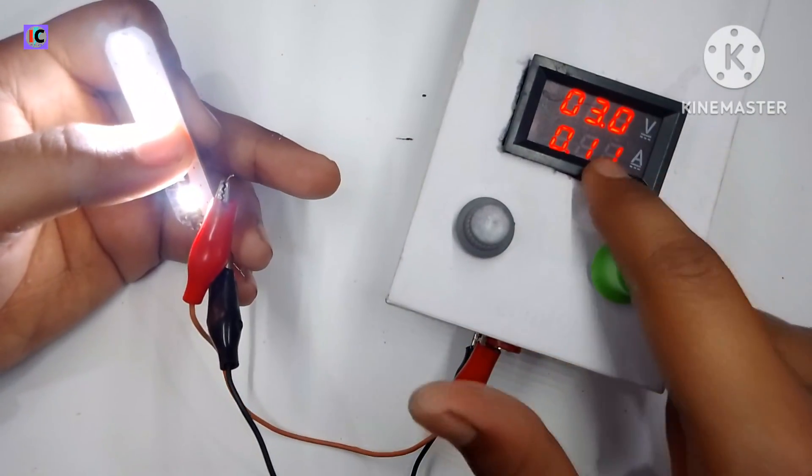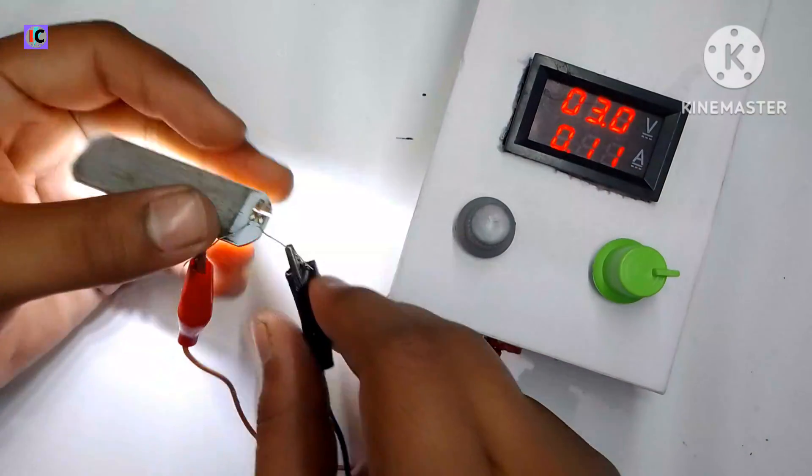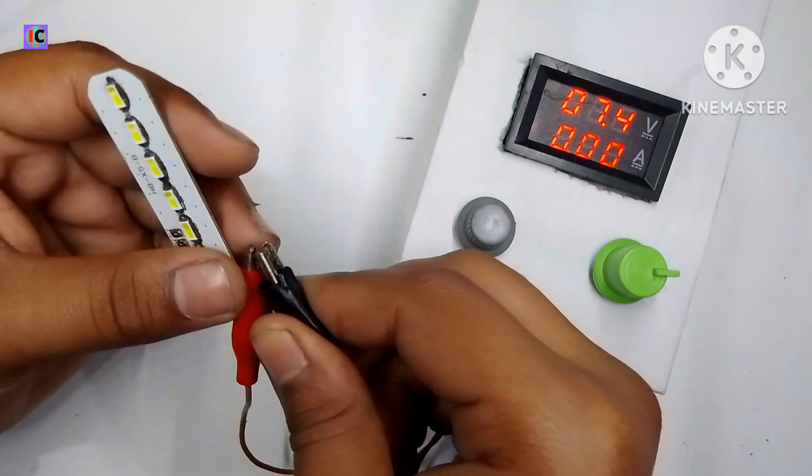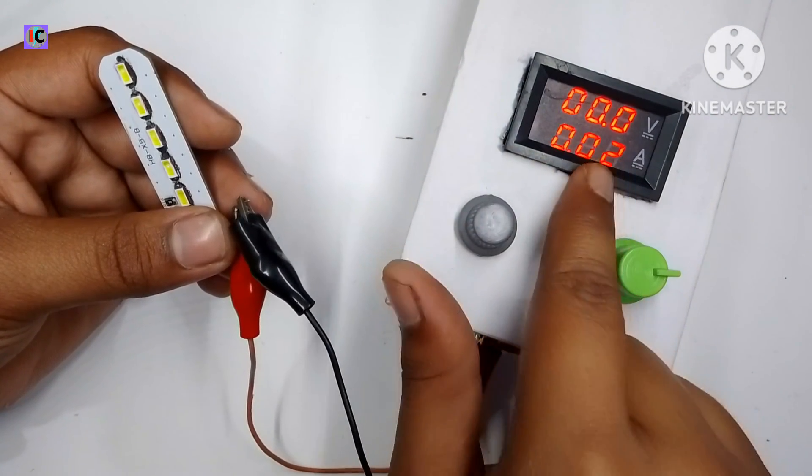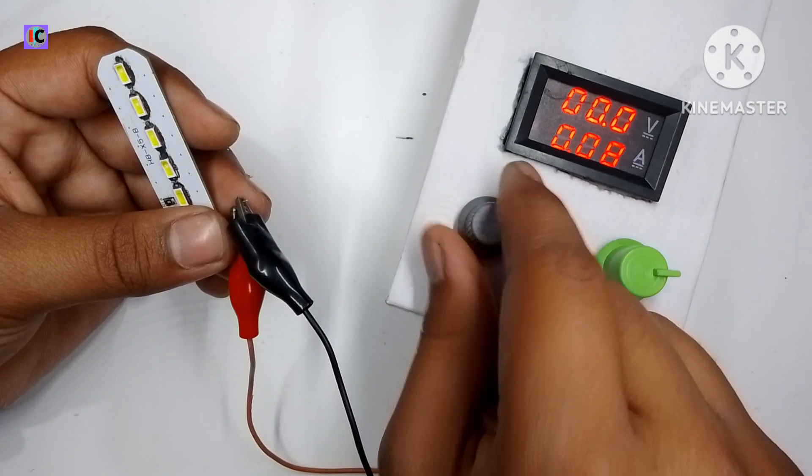Whenever you connect any load at this point, the voltage automatically drops as we have set the lower current limit.